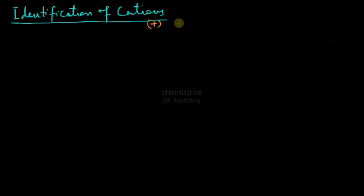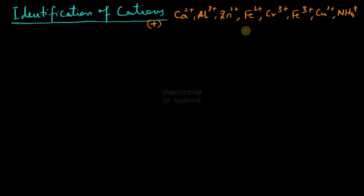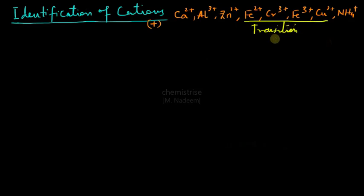First of all in O level we have a limited list of cations that we have to identify. So these are the eight cations that we have to identify, and some of these are cations of the transition elements. Transition elements are the elements which form colored compounds, while the others are not transition. Zinc is an exception — zinc is a transition element but it does not form colored compounds, though the reason is out of scope of O levels.